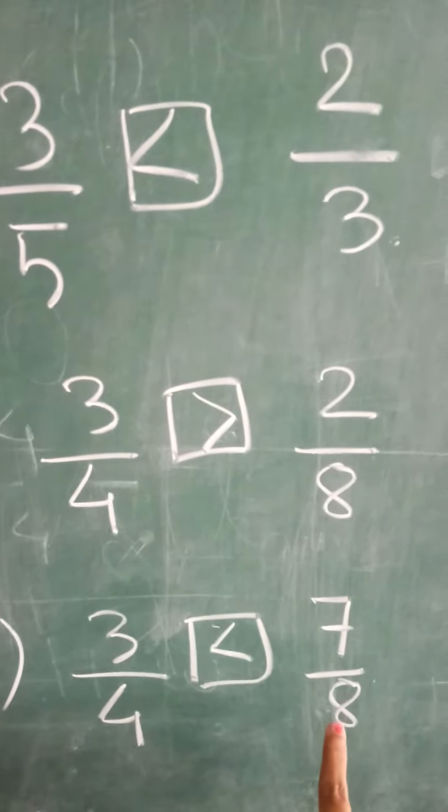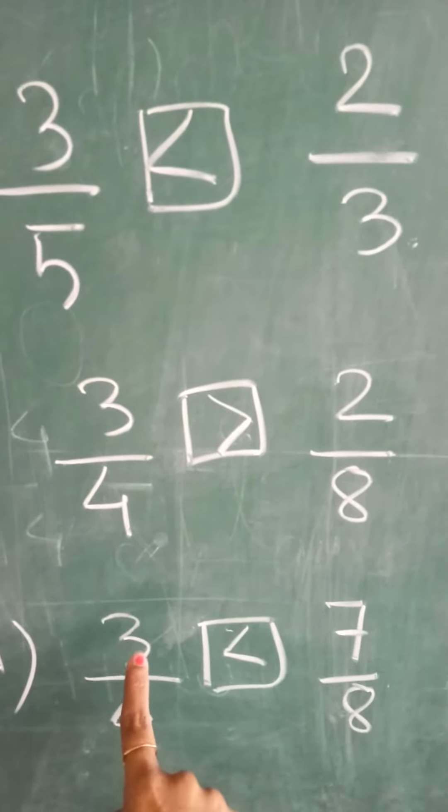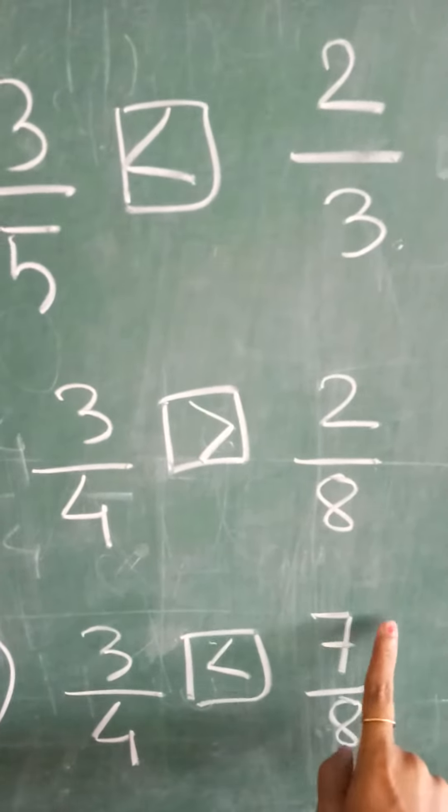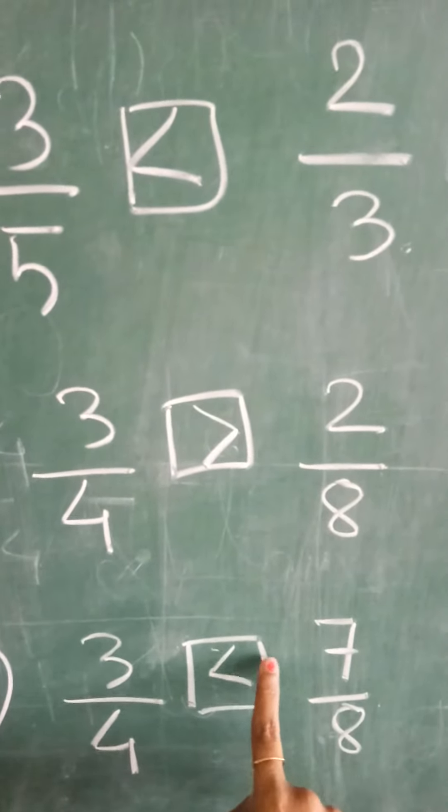Then 3 upon 4, 7 upon 8. Again cross multiply: 8 threes are 24, 4 sevens are 28. 28 is greater, so the greater sign will go on this side.